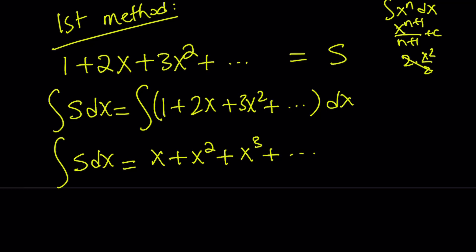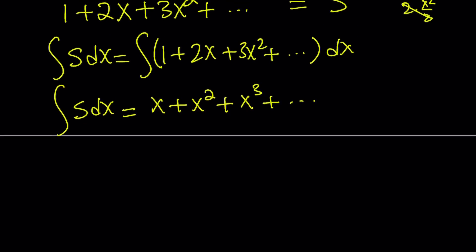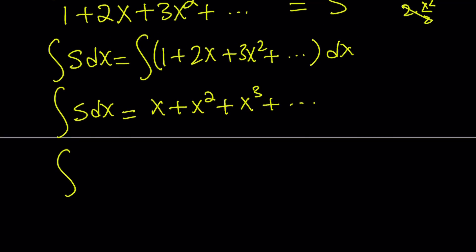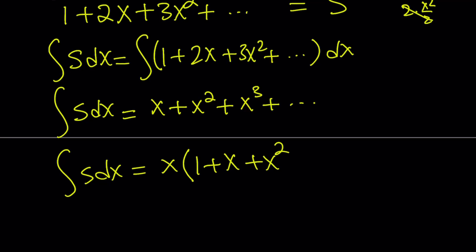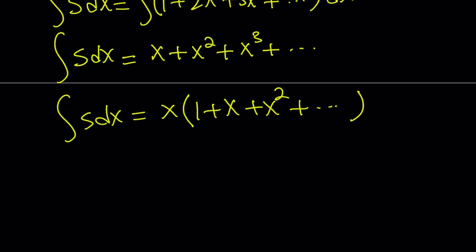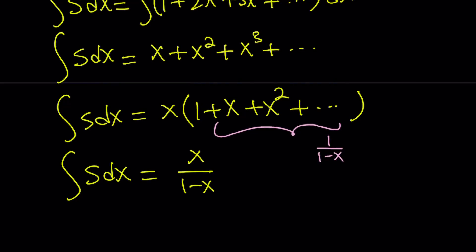You might be questioning why we don't have a constant here — since this is infinite, you can add a plus C at the end, but since I'm going to be using differentiation it's not going to matter. Now we do know what this sum is, because we can take out an x and it becomes a well-known sum. This sum, as long as x is between negative 1 and 1, is equivalent to 1 over 1 minus x. So the integral of S dx is just going to be x over 1 minus x.